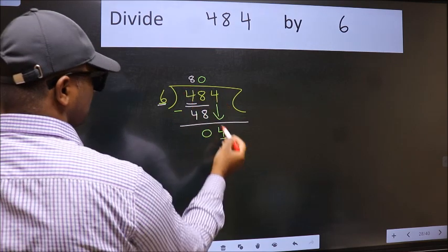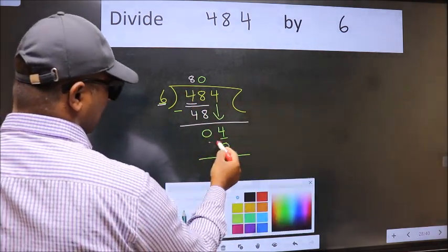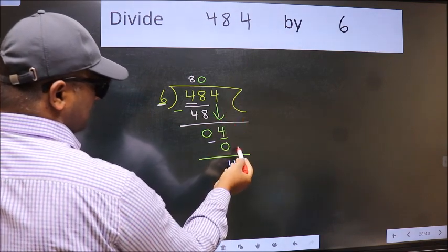So 6 into 0, 0. Now we subtract. We get 4. Over here, we did not bring any number down.